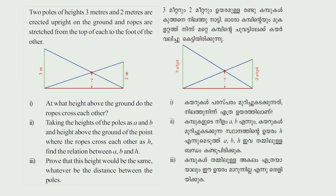Two poles of heights three meters and two meters are erected upright on the ground, and ropes are stretched from the top of each to the foot of the other. First question: at what height above the ground do the ropes cross each other? Next question: taking the heights of the poles as A and B, and the height above the ground of the point where the ropes cross as H, find the relation between A, B and H. Next question: prove that this height would be the same whatever be the distance between the poles.